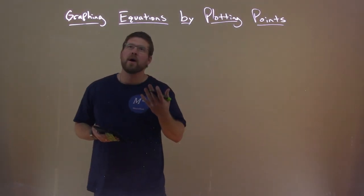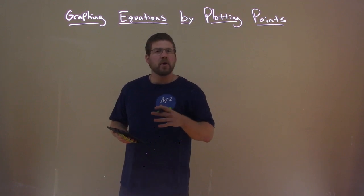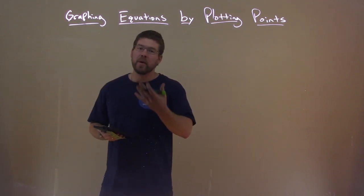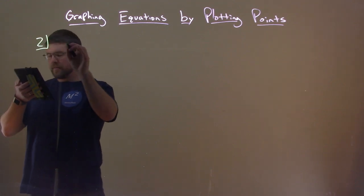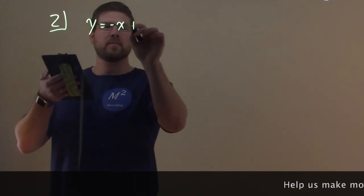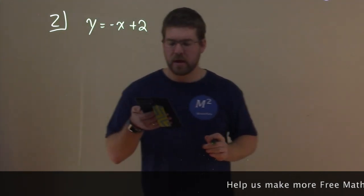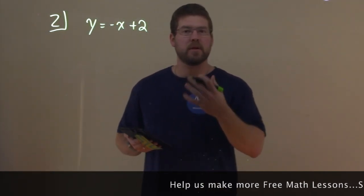So how do we graph equations by plotting points? We're given an equation of a line. In this case, for our example, let's dive into it. We have y equals negative x plus 2, and we want to graph this by plotting points.